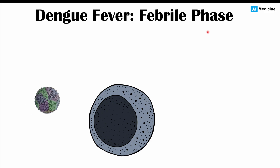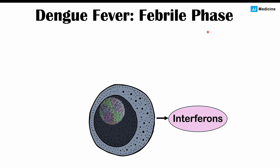If a cell gets infected with a dengue virus, that cell is going to release certain compounds known as interferons. Interferons will then have actions on other immune cells that release what we call cytokines — the signaling molecules. Some of these include interleukin-1-beta, interleukin-6, and TNF-alpha, or tumor necrosis factor alpha. These cytokines are triggered by the release of interferons and lead to specific findings, including the onset of fever and other symptoms.